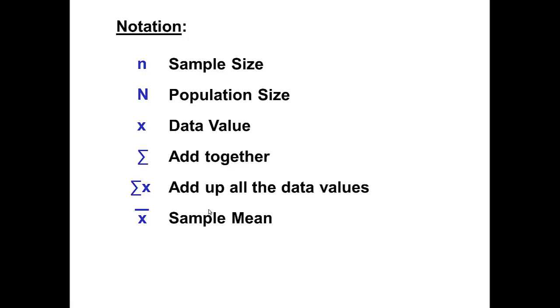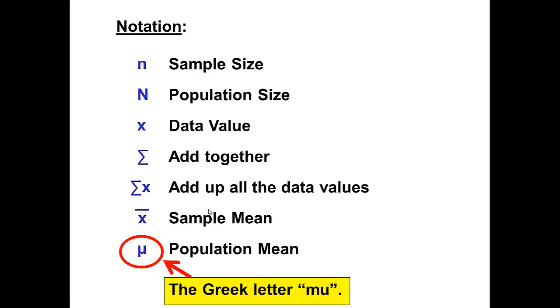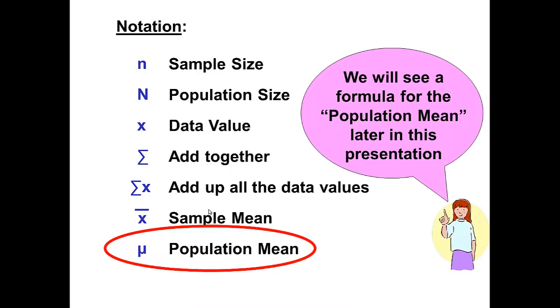We're almost done. The next is another Greek letter and it stands for the population mean. It is the Greek letter mu. We will see a formula for the population mean later in this presentation.